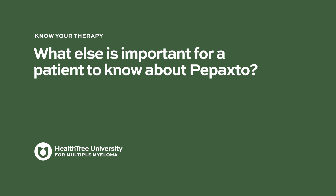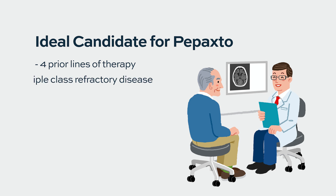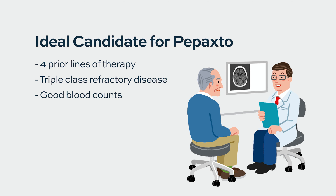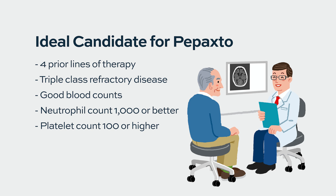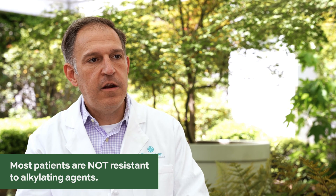The overwhelming majority of these patients have disease resistant to all three drug classes. The ideal patient for melphalanflufenamide and dexamethasone is someone with at least four prior lines of therapy, triple-class refractory disease — resistant to at least one proteasome inhibitor, one immunomodulatory drug, and one CD38 antibody — good blood counts with a neutrophil count of at least 1,000 (ideally 1,500 or better), a platelet count of at least 100, and who does not have alkylator-resistant disease — not already resistant to melphalan, cyclophosphamide, or bendamustine.